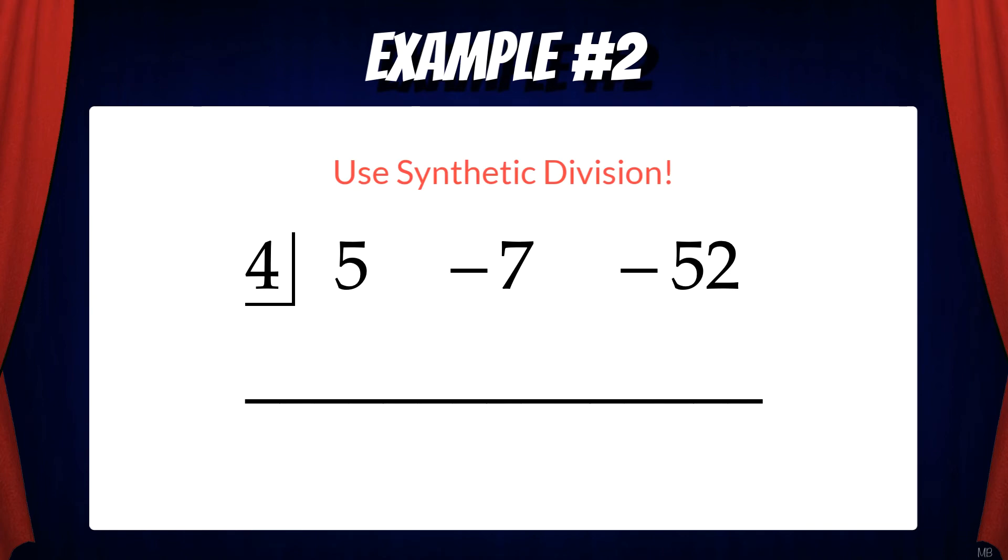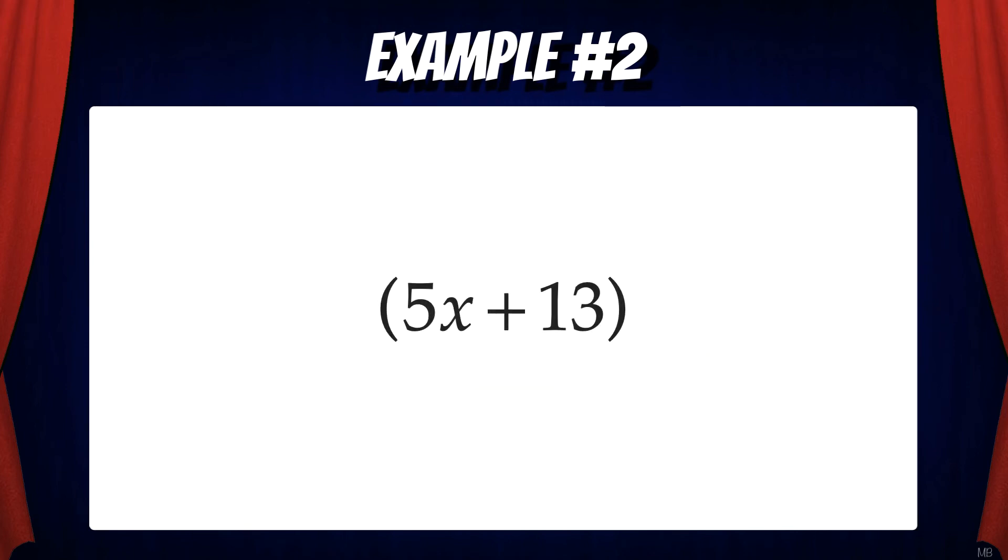Since we're dividing by x minus 4, 4 goes in the little box in the upper left. And then we write the coefficients 5, negative 7, negative 52. Step 1. Bring down the 5. Then multiply 5 times 4. That gives us 20. Then add negative 7 and 20. That gives us 13. Then multiply 13 times 4. That gives us 52. And then add negative 52 plus 52 which equals 0.